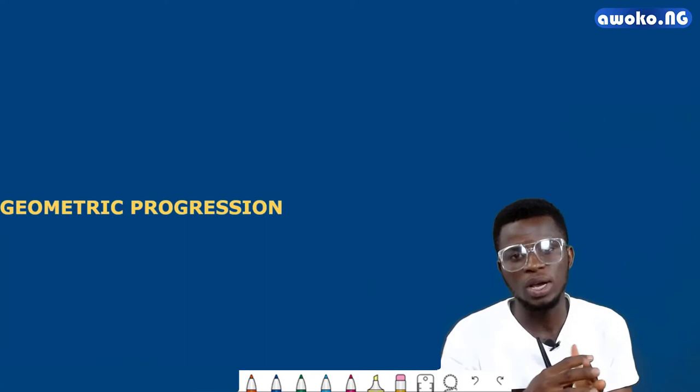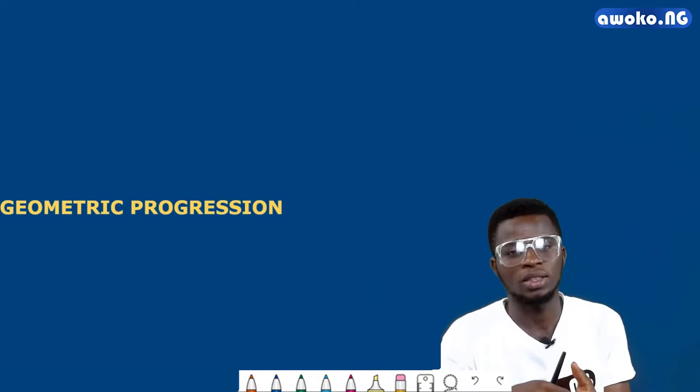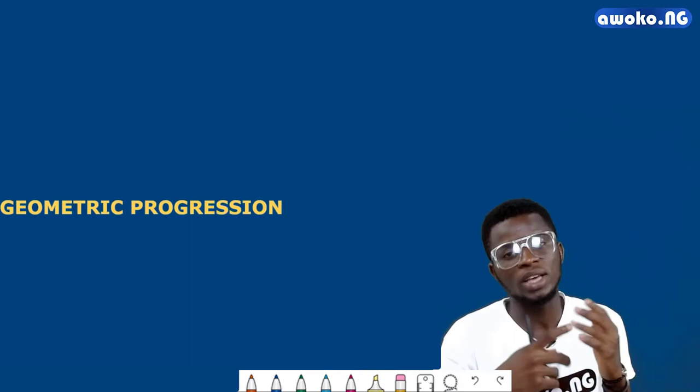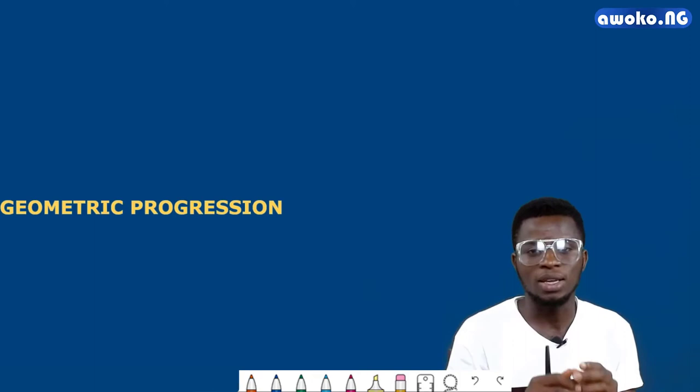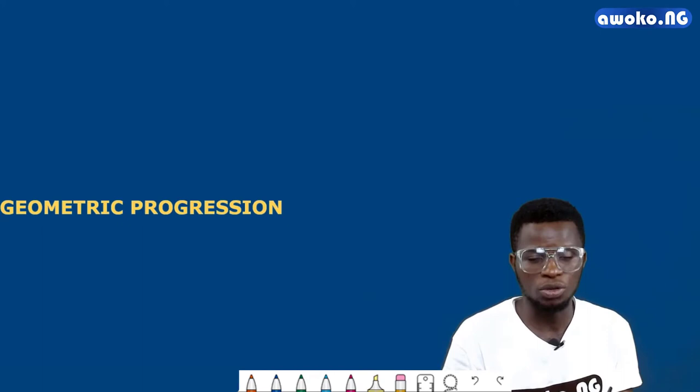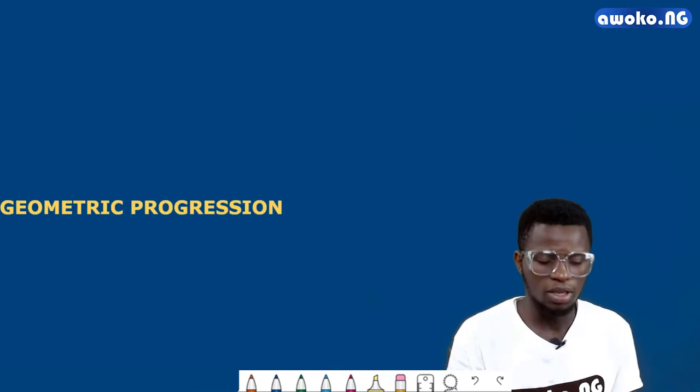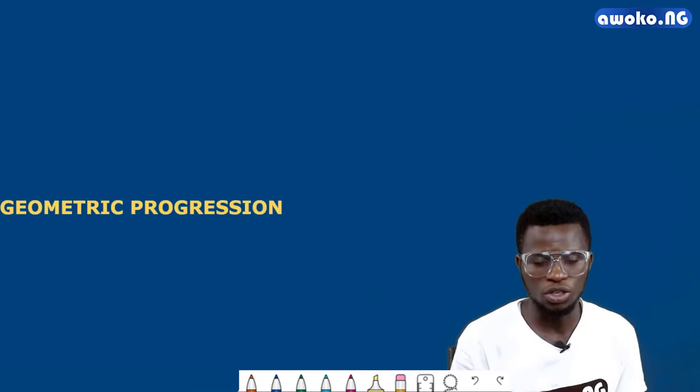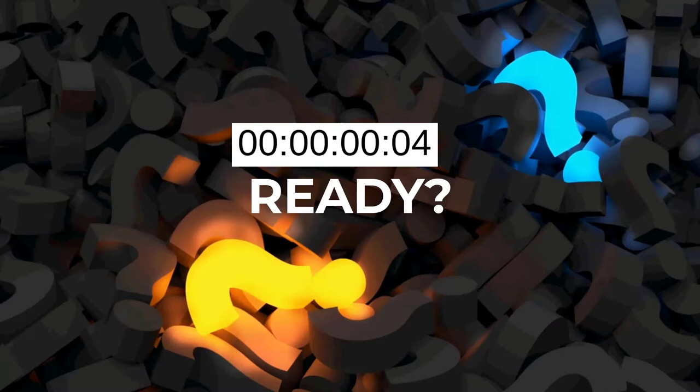If you can remember, I made mention of two major types of progressions we have in mathematics. We saw that they divide into two: the arithmetic progression, otherwise known as the linear sequence, and the geometric progression, otherwise known as the exponential sequence. We've already done justice to the arithmetic progressions, but in this lecture we are going to consider the geometric progression. What is a geometric progression or an exponential sequence?